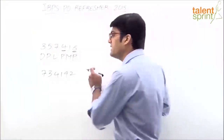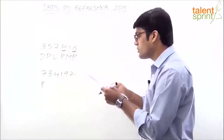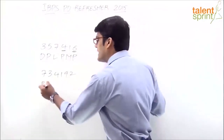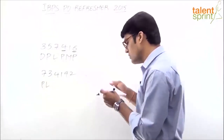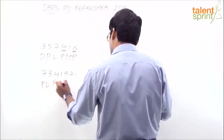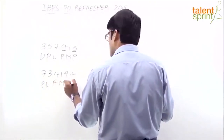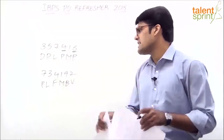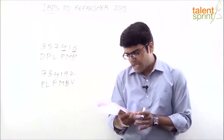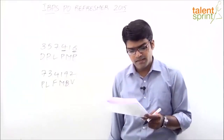The code for 3 is P, so P should come in the first position after the interchange. The code for 7 is L, so L comes in the second position. Then for 4, 1, 9, 2: the code for 4 is F, the code for 1 is M, the code for 9 is B, and the code for 2 is B. So the answer should be P, L, F, M, B, D — but none of the options match. So the answer is option 5.